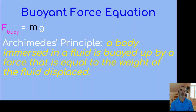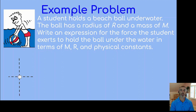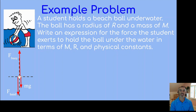That's why we use the density of the fluid times the volume of the fluid displaced times g. Now let's look at an example problem: a student holds a beach ball under water. The ball has a radius of r and a mass of m, and we want to write an expression for the force the student must exert to hold the ball under water, in terms of m, r, and physical constants. Starting with a free body diagram: the ball has gravitational force pulling down, the student's hand force pushing down, and the buoyant force pointing upward. The buoyant force is longer than either the hand force or mg because the ball is in equilibrium.